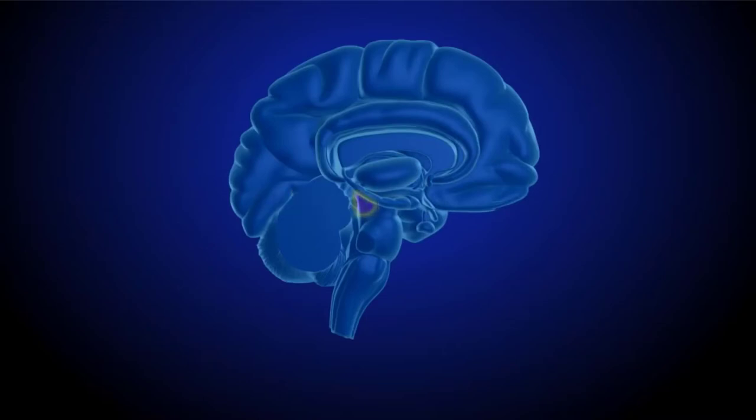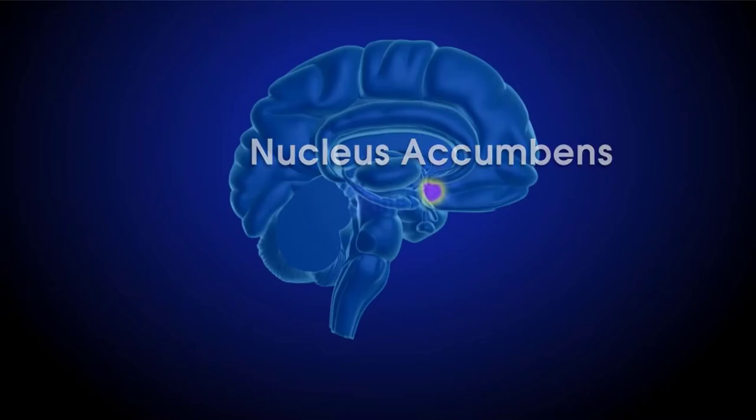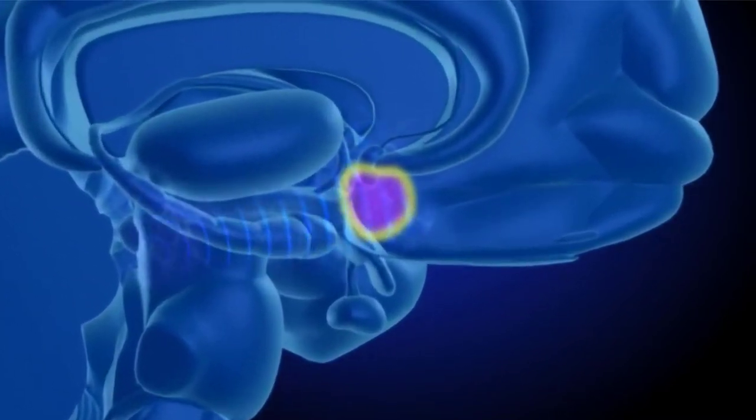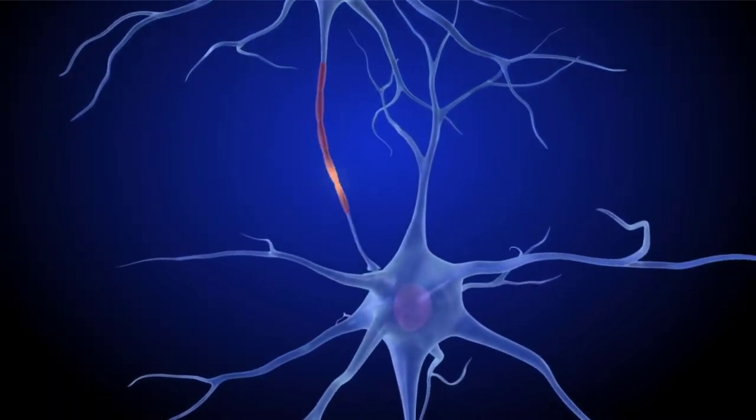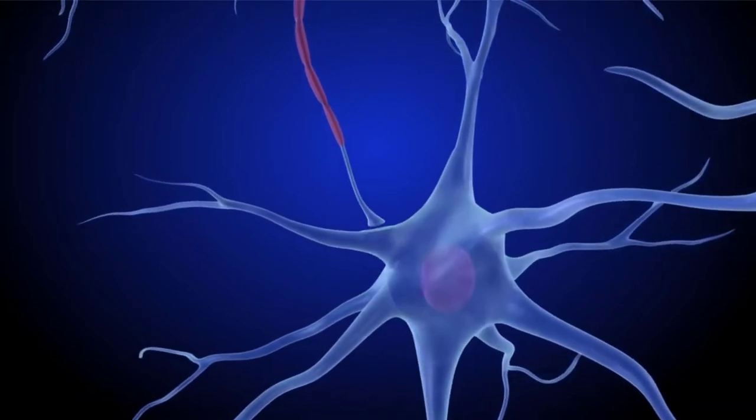This sets off a chain reaction within the limbic system. Long projections of VTA cells go to an area called the ventral striatum or VS. The chain of activated cells quickly reaches an area in the VS called the nucleus accumbens. This is the part of the brain that says 'wahoo, do that again.'